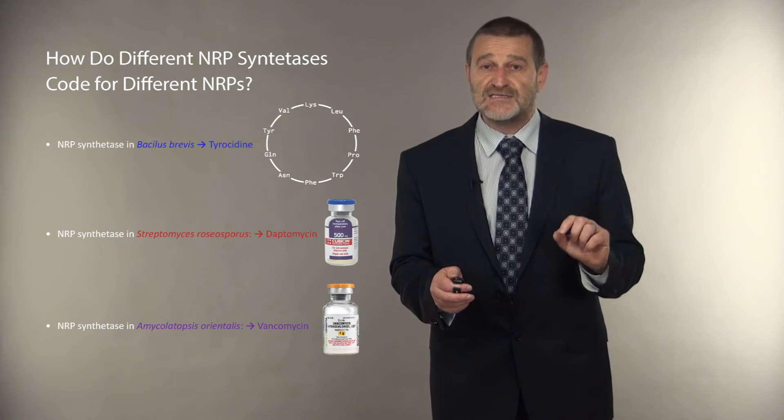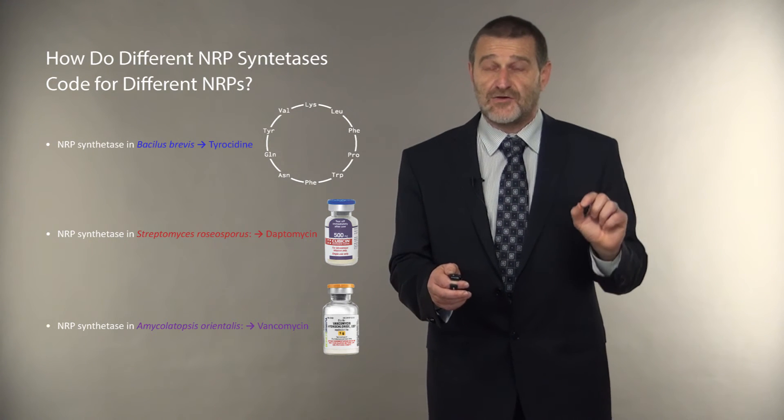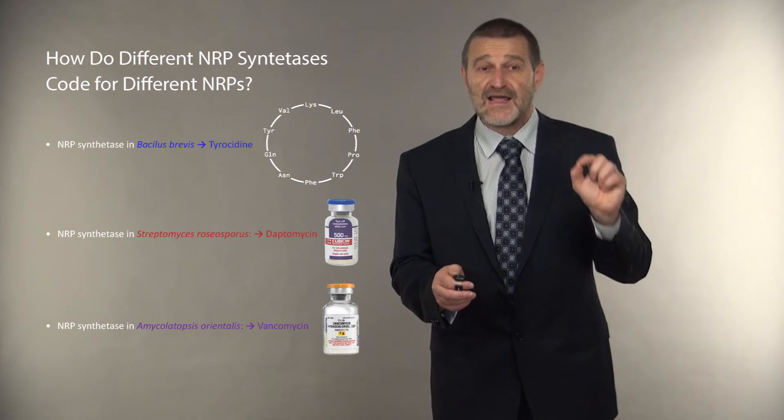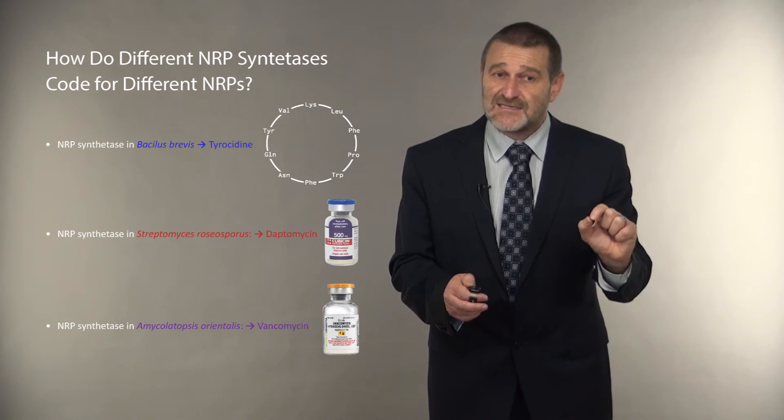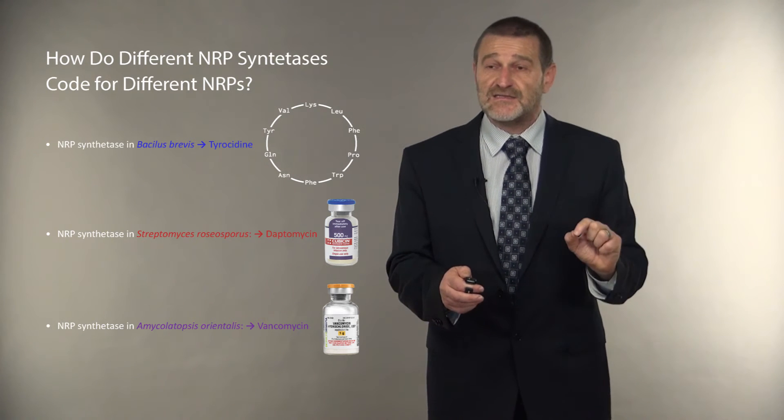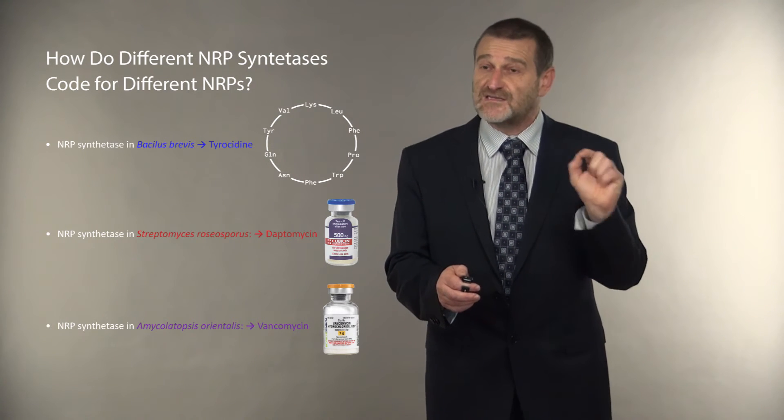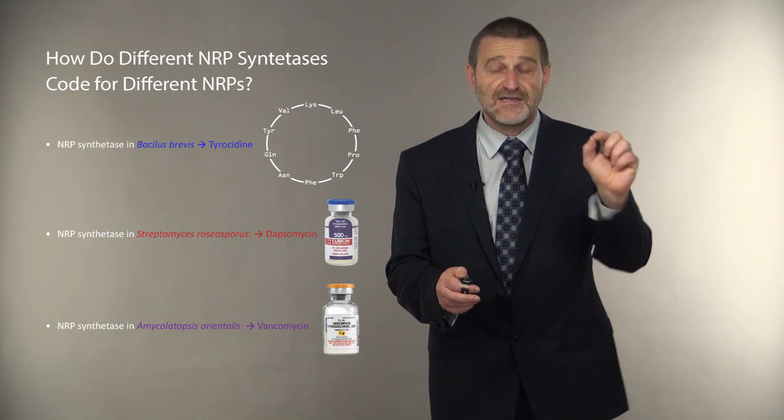NRP synthetase in Bacillus brevis, as we learned, codes for 10 amino acid peptide tyrocidine. But what particular amino acids in NRP synthetase are responsible for synthesizing, let's say, valine in tyrocidine?